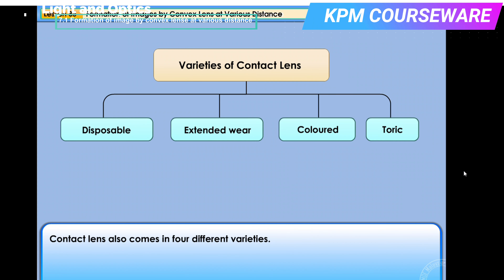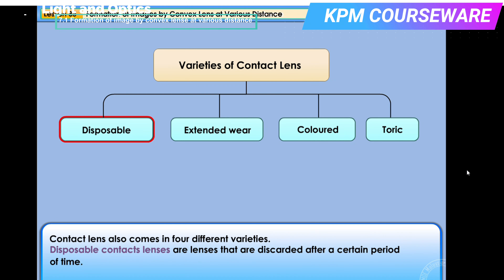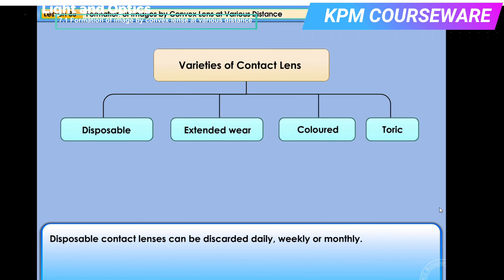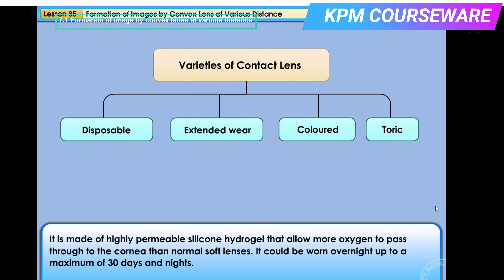Contact lenses also come in four different varieties. Disposable contact lenses are lenses that are discarded after a certain period of time — daily, weekly, or monthly. Extended wear lenses can be worn overnight; they are made of highly permeable silicon hydrogel that allows more oxygen to pass through to the cornea than normal soft lenses, and can be worn up to a maximum of 30 days and nights.